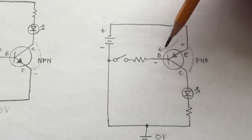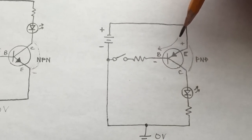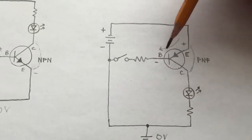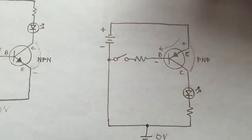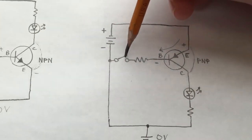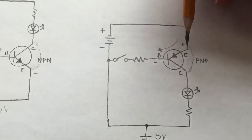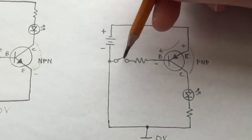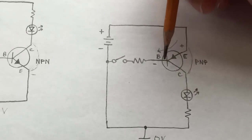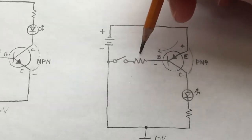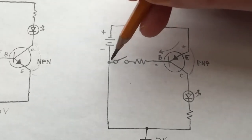No current will flow unless the transistor is turned on, and for that we need positive current flow into the emitter and out of the base — the opposite of an NPN transistor. When this switch is closed, positive current from the battery flows into the emitter, and current flows out of the base through the current limiting resistor and through the switch back to the battery.